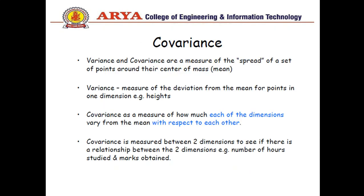To solve PCA problems, principal component analysis problems, first of all we should know about the covariance matrix. So what is covariance? Variance and covariances are a measure of the spread of a set of points around the center of mass that is mean.